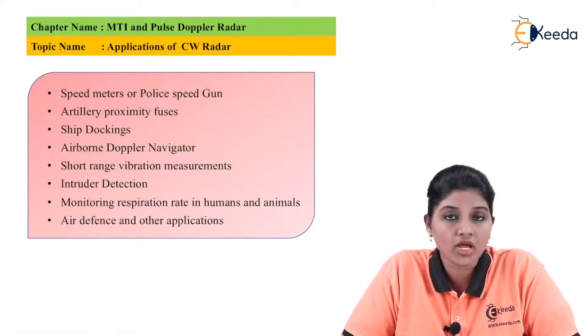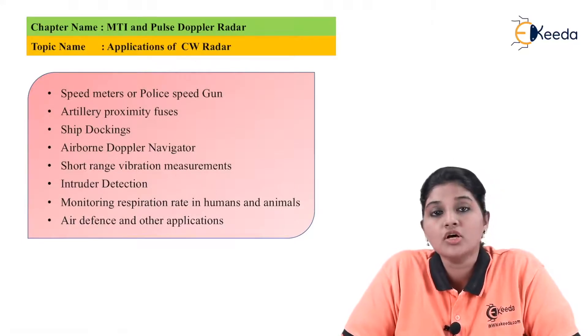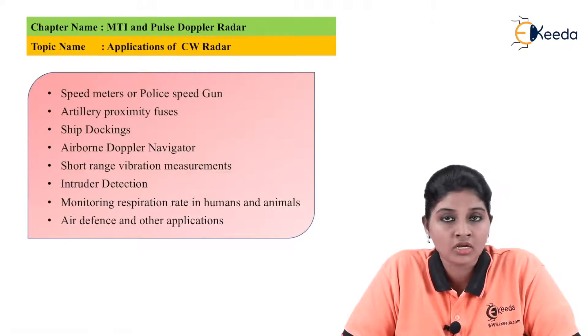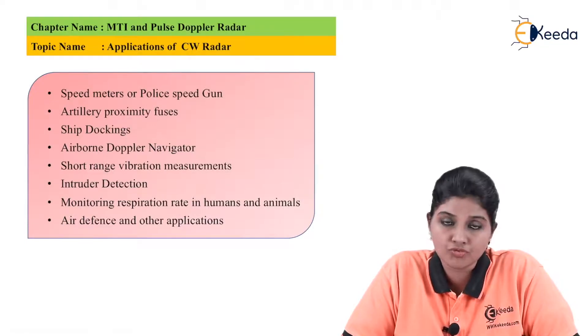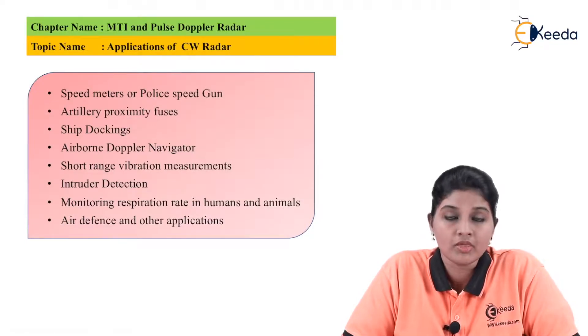It is used for the non-contact measurement of speed, time, or distance. So these are the basic few applications of the continuous wave radar system.